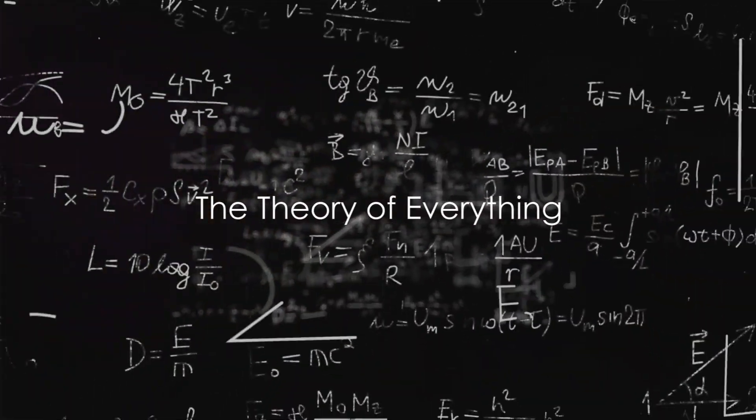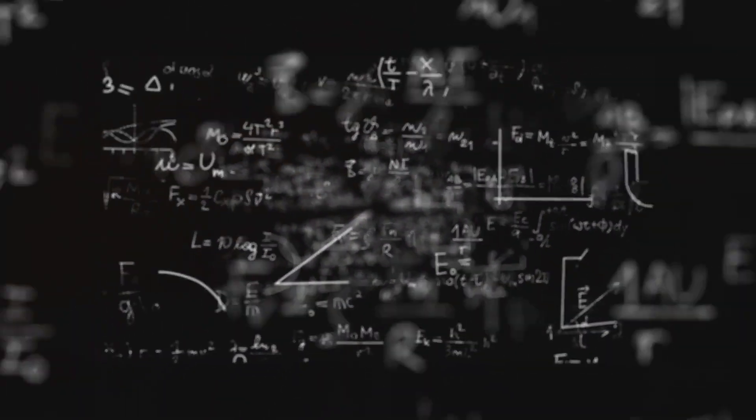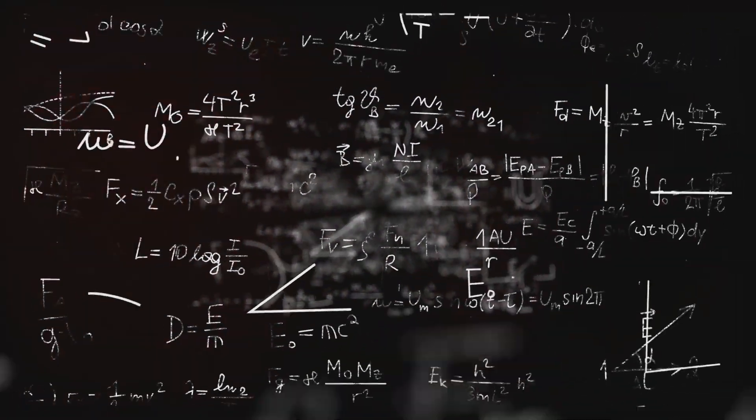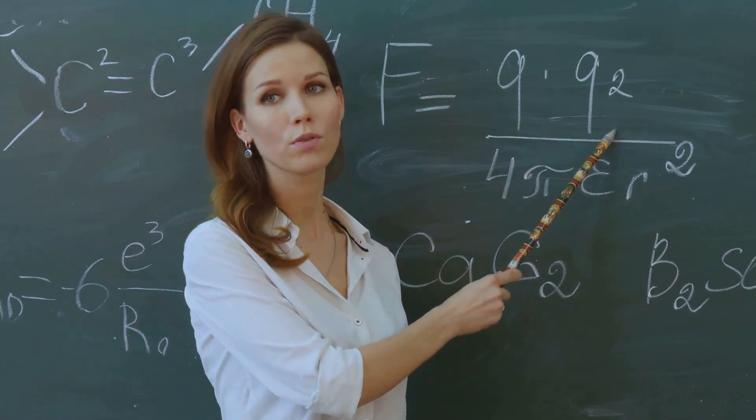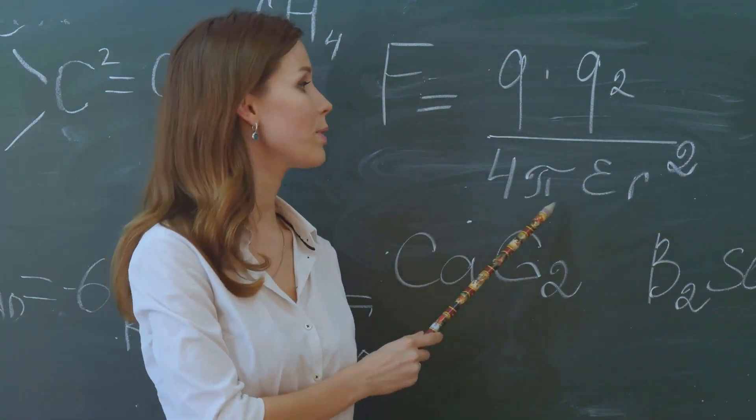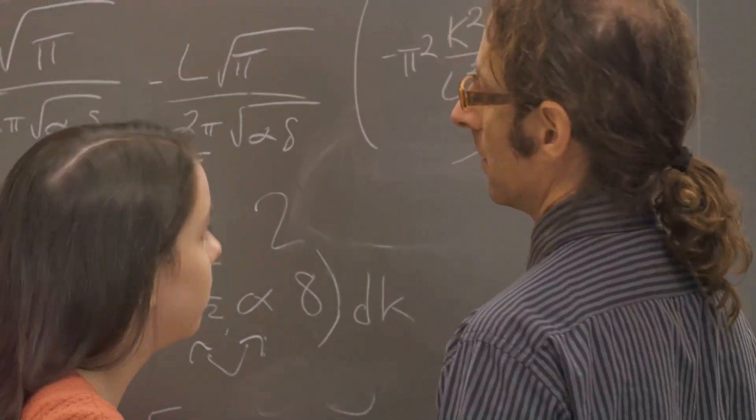And finally, at number 1, we have the theory of everything. This is the holy grail of physics, a single, all-encompassing framework that explains every physical aspect of the universe. From the tiniest particles to the grand cosmos, everything falls under its umbrella.